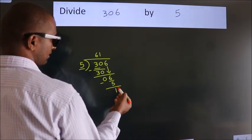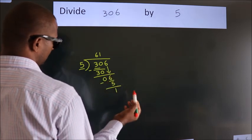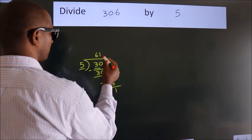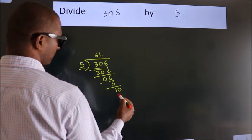After this, no more numbers to bring down. So what we do is put a dot and take 0, giving us 10.